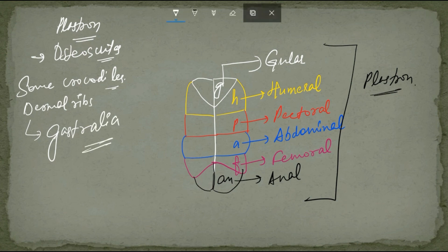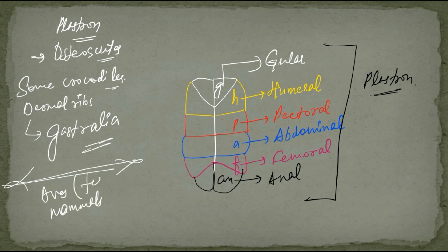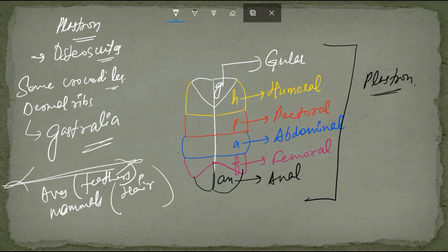This completes the discussion of scales in Amphibia and Reptilia. The rest of the skin modifications will be covered in the next lecture on class Aves and mammals, which will include discussion of feathers in Aves, and scales, hair, horns, hooves, and nails in mammals.